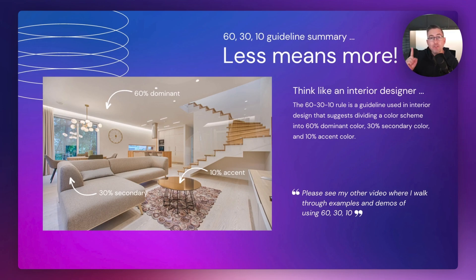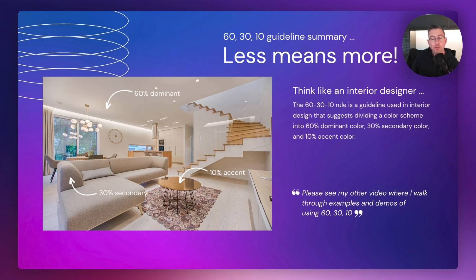As a recap from my previous video — if you haven't seen it, please go and watch the full video because it'll really help you out — the 60-30-10 guideline is generally how interior designers think when designing a room. As you can see, 60% is the dominant color made up of the ceiling and walls, the 30% is the sofa color, and the 10% is the accent color picking up the key characteristics of the room. That's how we're going to think when applying color through our application.